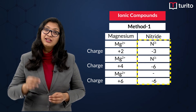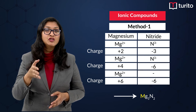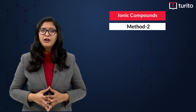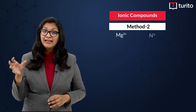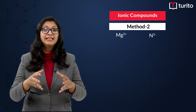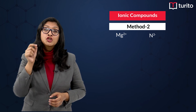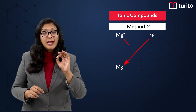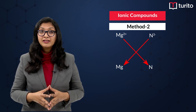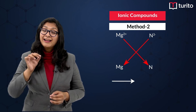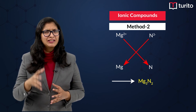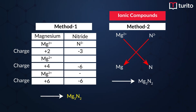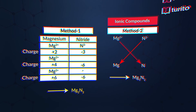So the formula is Mg₃N₂. There is also a shortcut: write Mg²⁺ and N³⁻, then swap the numbers — write the charge of nitrogen (3) as the subscript for Mg, and the charge of Mg (2) as the subscript for N. This gives Mg₃N₂, the same answer. The first method builds understanding, and this cross-swap trick is the shortcut.